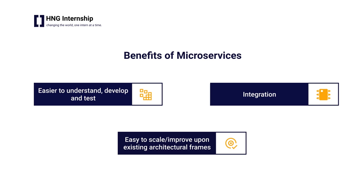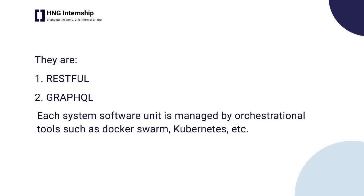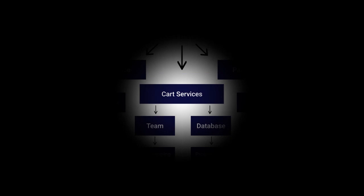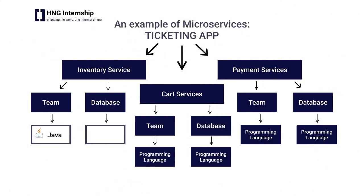The microservices architecture is relatively new; however, a number of mature technologies support it. Major amongst these are RESTful and GraphQL. They utilize different algorithm structures with service mesh technology that runs different containers, where each software unit is housed. These containers are managed by orchestration tools such as Kubernetes, Docker Swarm, and DCOS, which serve as a loose connectivity platform to manage microservices through their development and deployment phases.